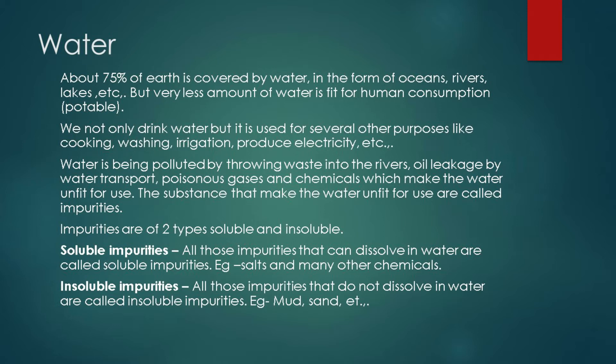Impurities are of two types in water: soluble impurities and insoluble impurities. What are soluble impurities? All those impurities that can dissolve in water are called soluble impurities. For example, salts and many other chemicals mixed into the water — if we drink that type of water, it is very hazardous and dangerous for our health.